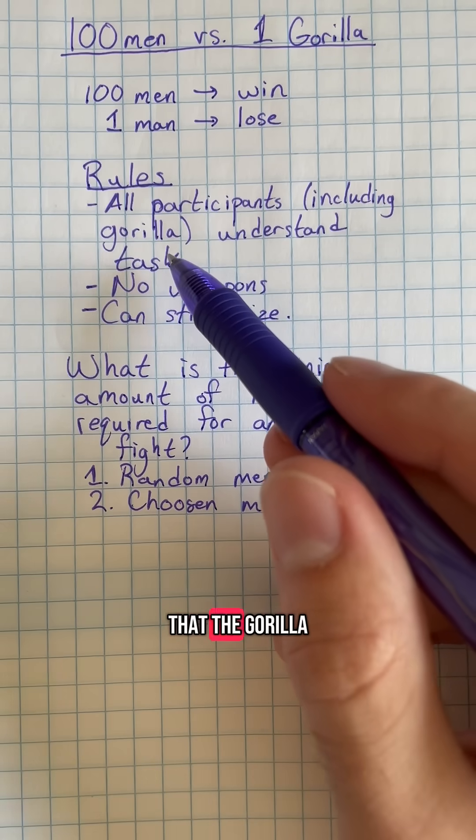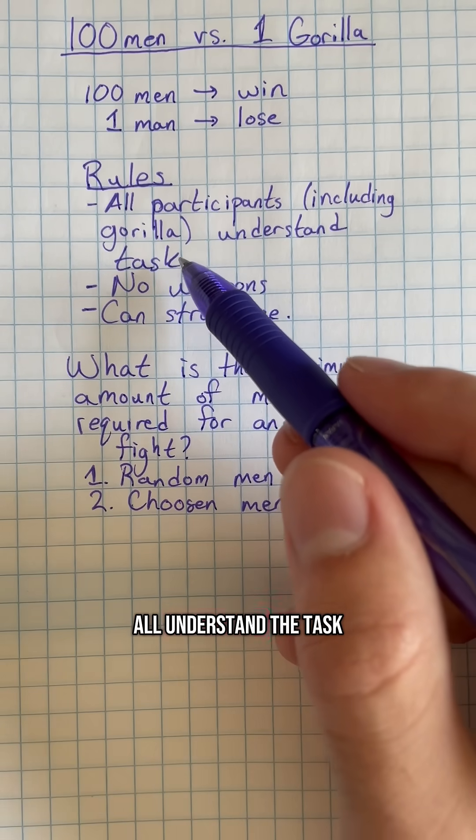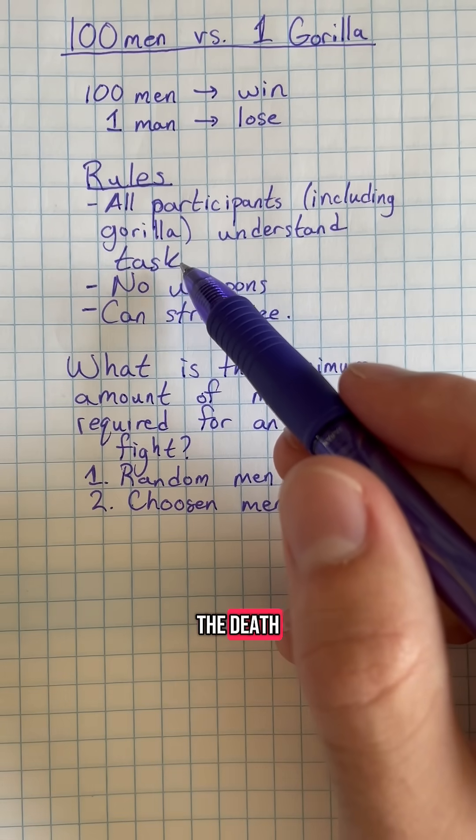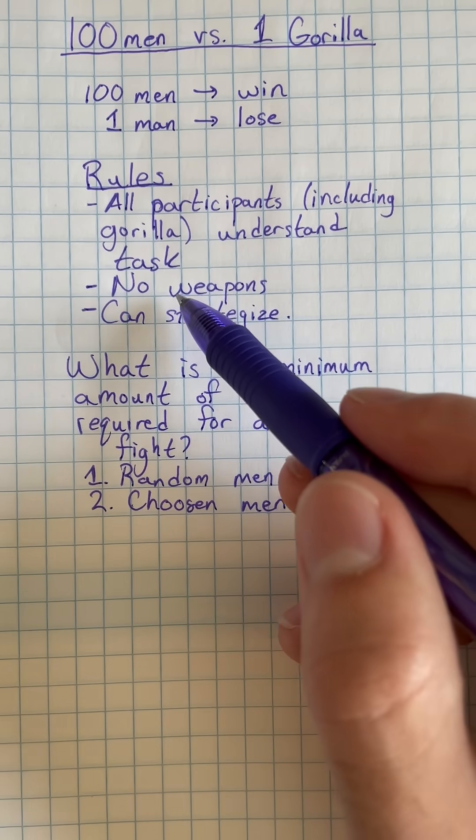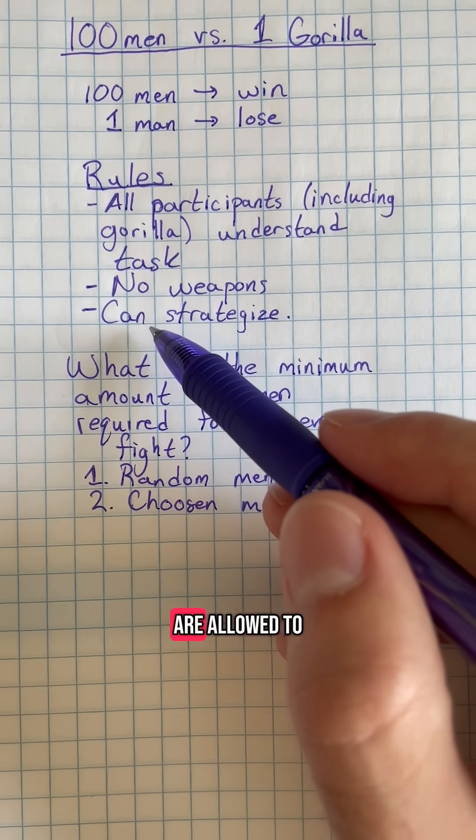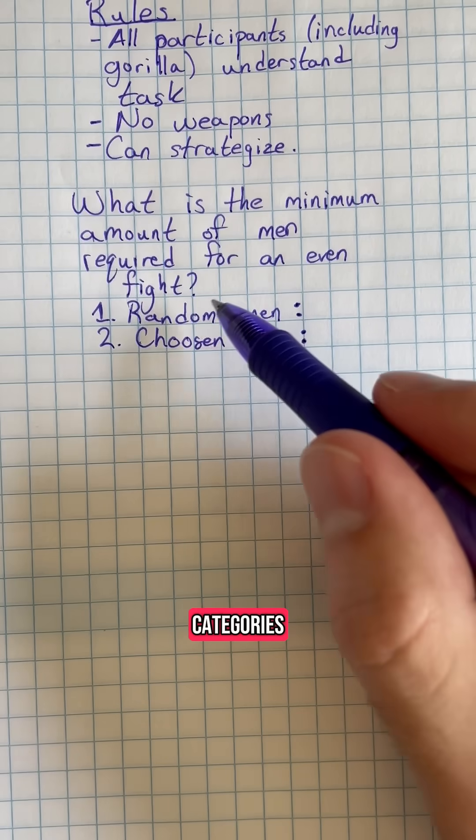The rules being that the gorilla and the men all understand the task, they understand that this is a fight to the death, and it's not that the gorilla is just confused in an arena and doesn't know what's going on. There are no weapons, and all participants are allowed to strategize before the match begins. There's also two categories,